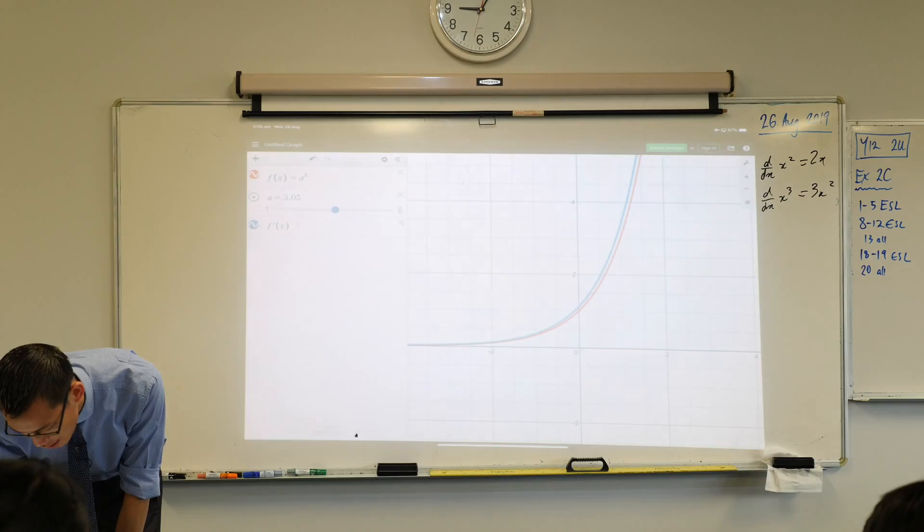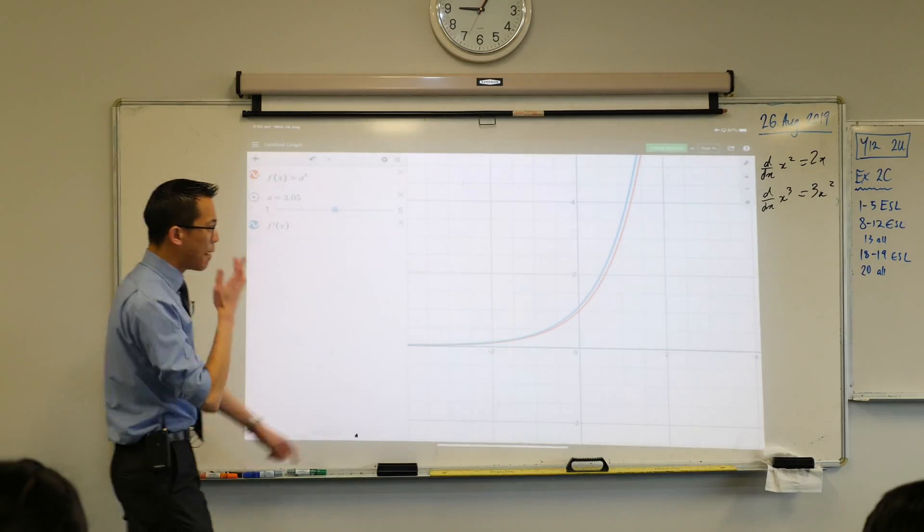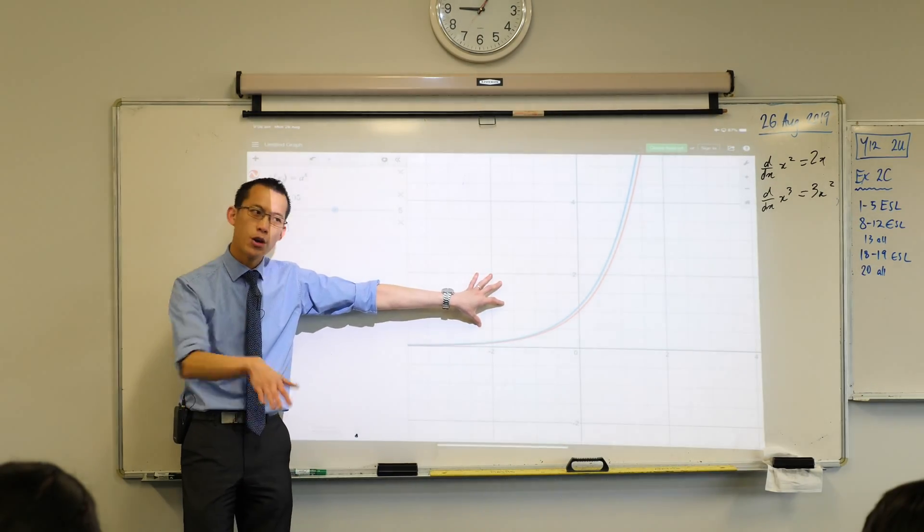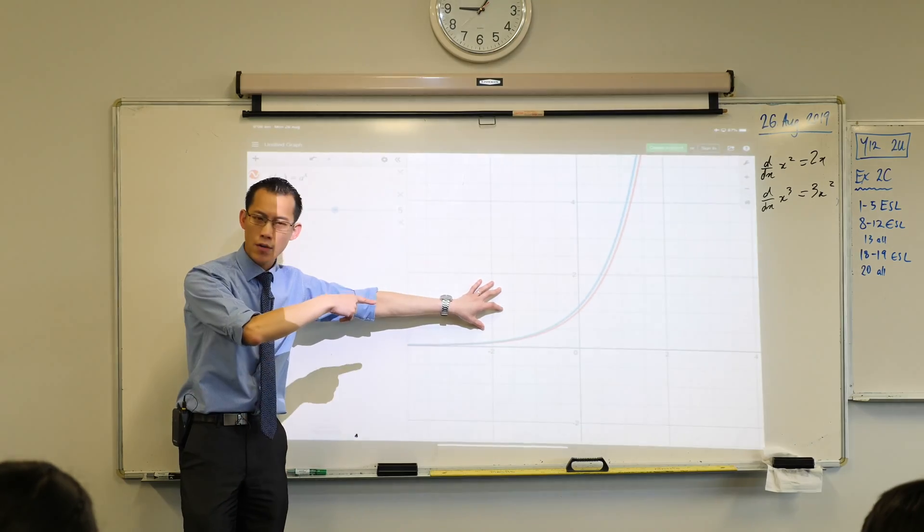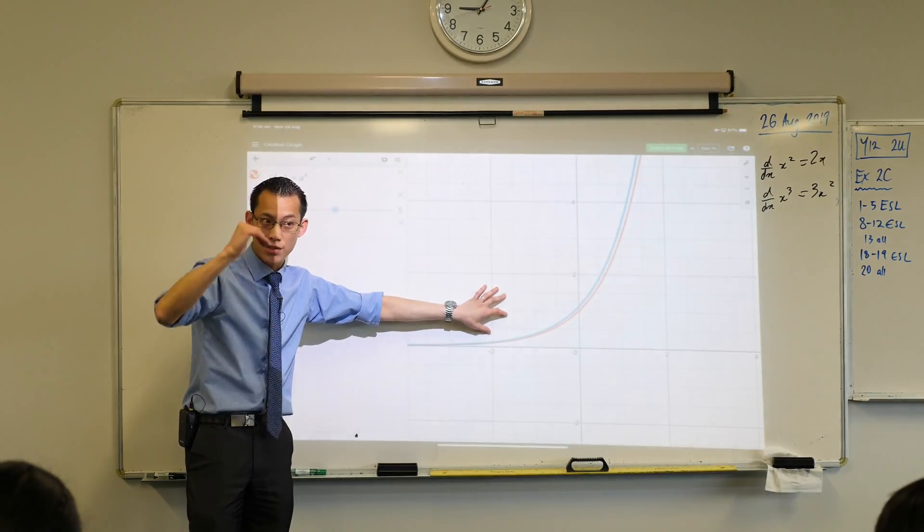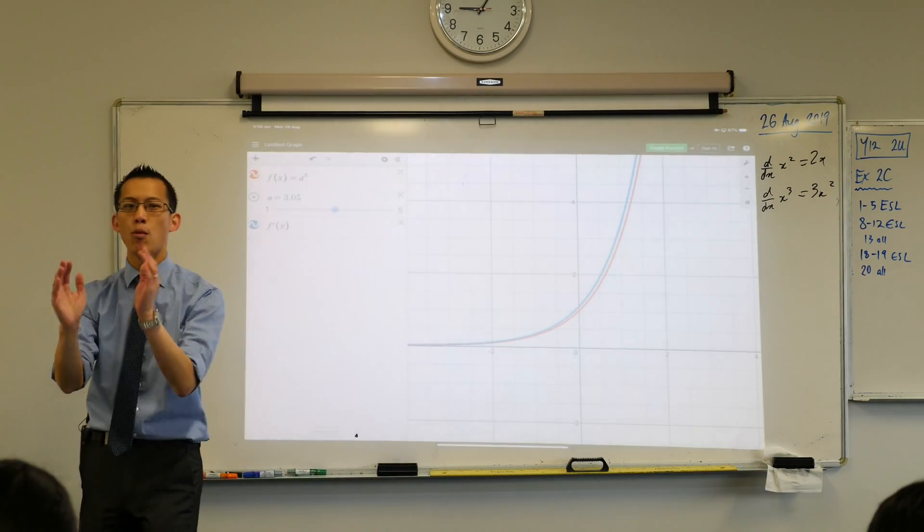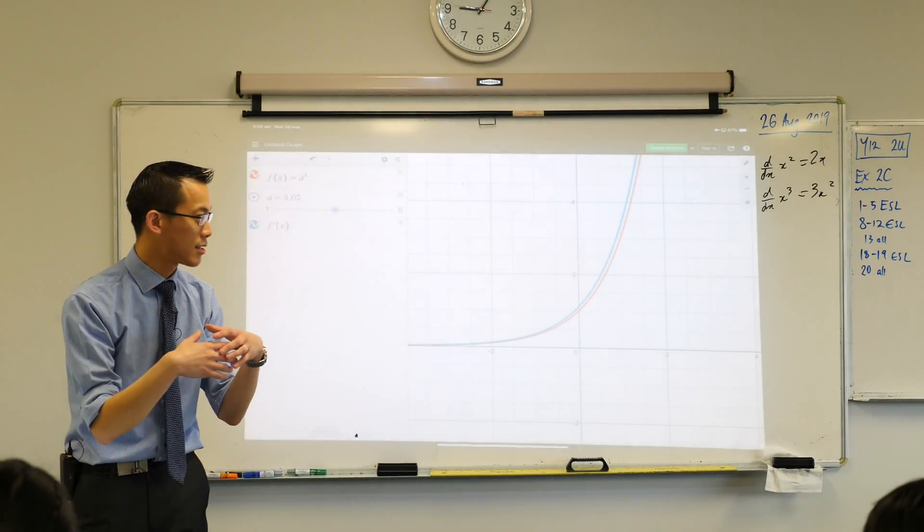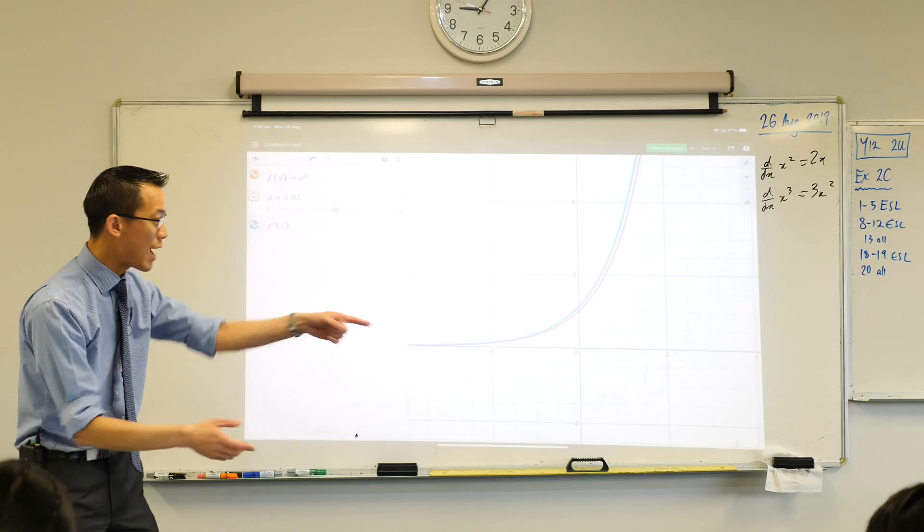But at a certain point, for example, if you went to A equals 3, just slide it up there. You're like, whoa, hold on a second. Our blue graph, which is our derivative, it's no longer below my exponential. Where is it? It's just above. All the way along. It's just above, just above, just above. Some of you might have noticed somewhere between 2 and 3, there's this magic spot where it lines up. Try and get it close, right?